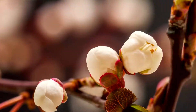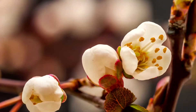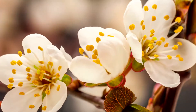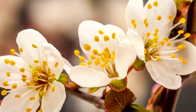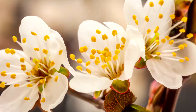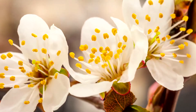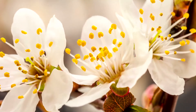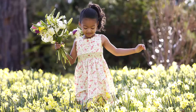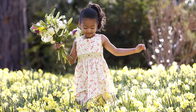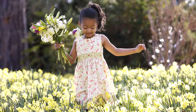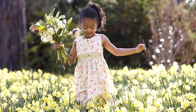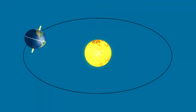Plants need sunlight and water to live and grow. What are some changes that you notice about plants in the spring? In spring, there is enough sunlight and rain for plants to begin to bloom, grow, and have offspring.